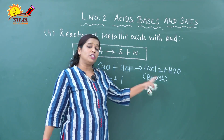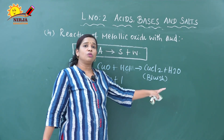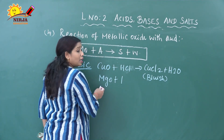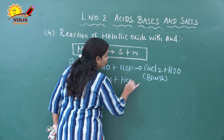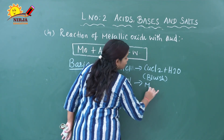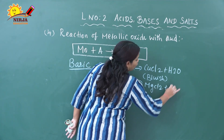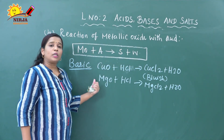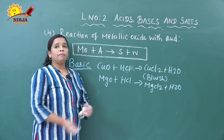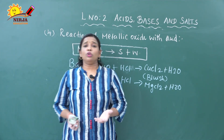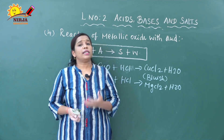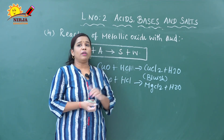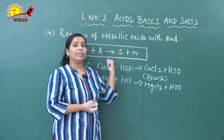The colorless solution is changed into a bluish-green color solution — that is called copper chloride. Similarly, magnesium oxide reacts with hydrochloric acid to produce magnesium chloride and water. These are examples of metallic oxide reacting with acid. Metallic oxides are basic in nature because they give salt and water on reacting with acid.